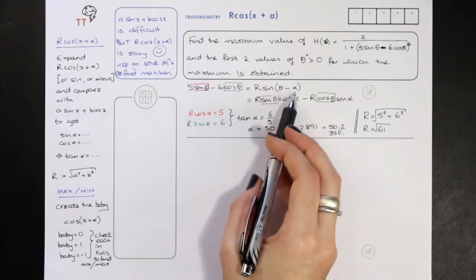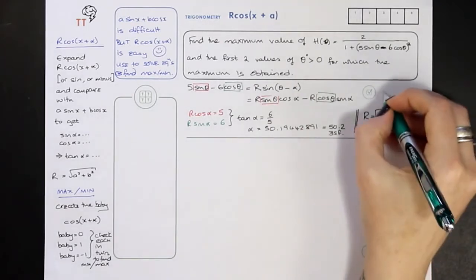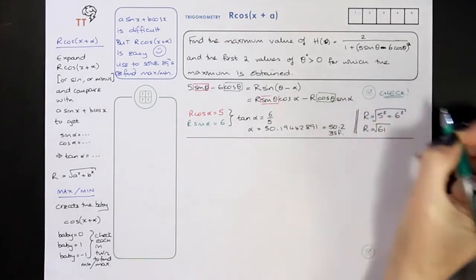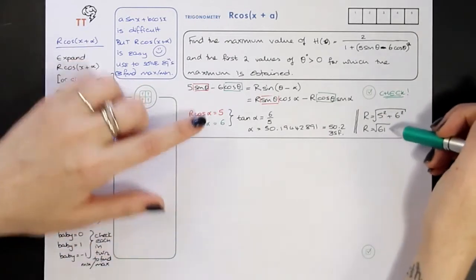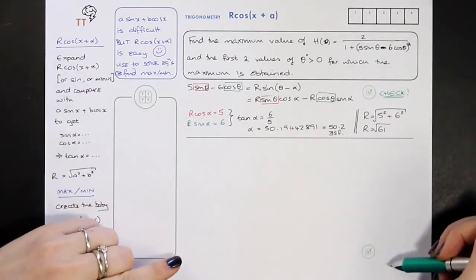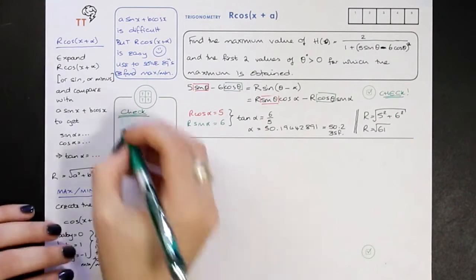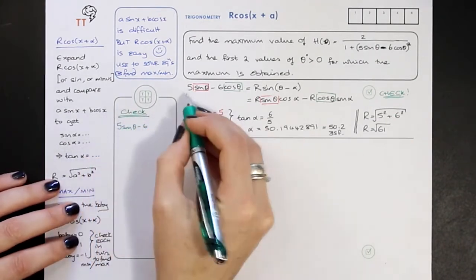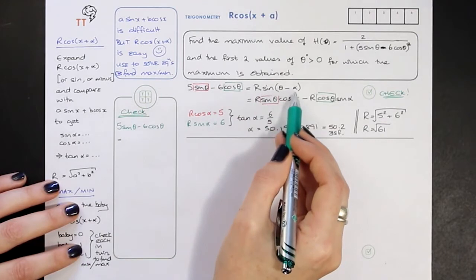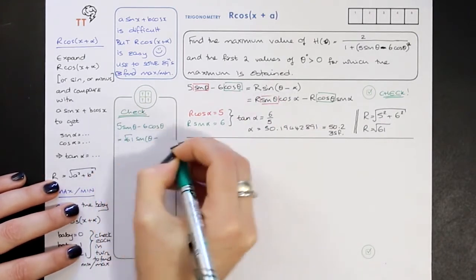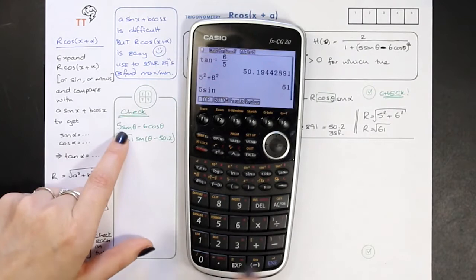We've found R, we've found alpha, so we know how to smash these two together to make one thing. But you must stop at this point and check, because you're going to be using this — it would never be a whole question on its own. If anything has gone wrong, all your accuracy marks here are lost, so it's really, really important to check. How do we check? We take the left-hand side, 5·sin(θ) − 6·cos(θ), and write down what we think it equals: √61·sin(θ − 50.2).